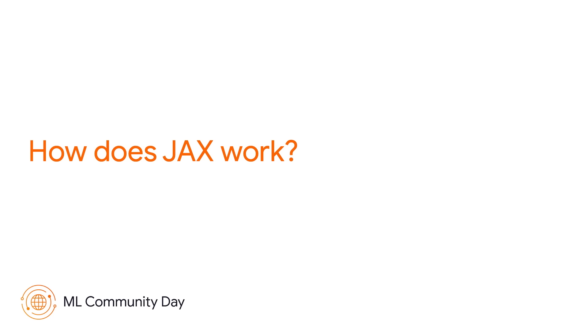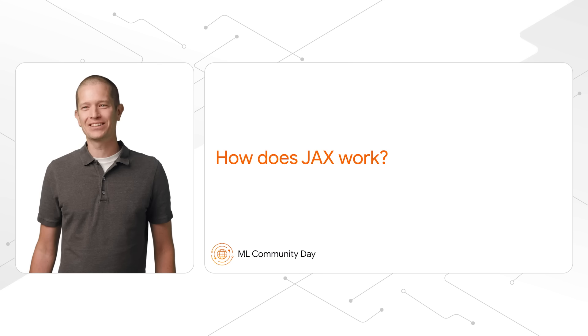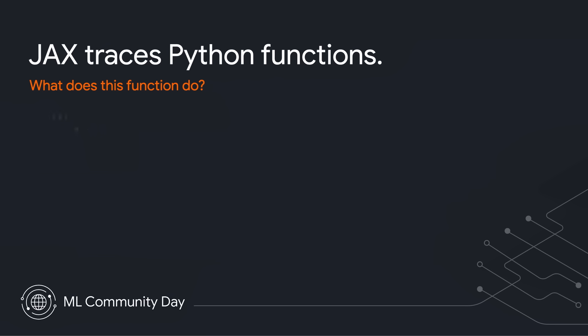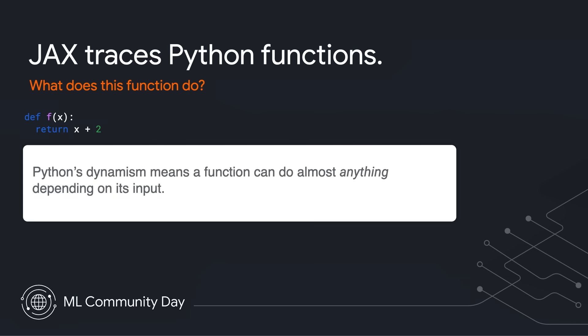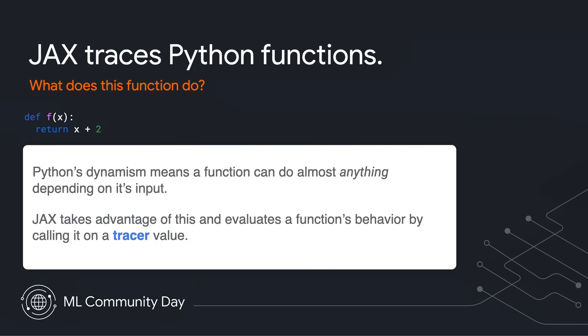I want to talk about how JAX works, because it's even more fun if you know what's going on under the hood. The gist is that JAX traces Python functions. As a thought experiment, consider a function f(x) returning x plus 2. Python is such a dynamic language that this function could literally do anything — for example, if x is an instance of some object that overloads the add function. This drives home the point that we don't really know what Python functions do unless we know exactly what's being passed to them. JAX takes advantage of this Python dynamism to figure out what's going on in a function.